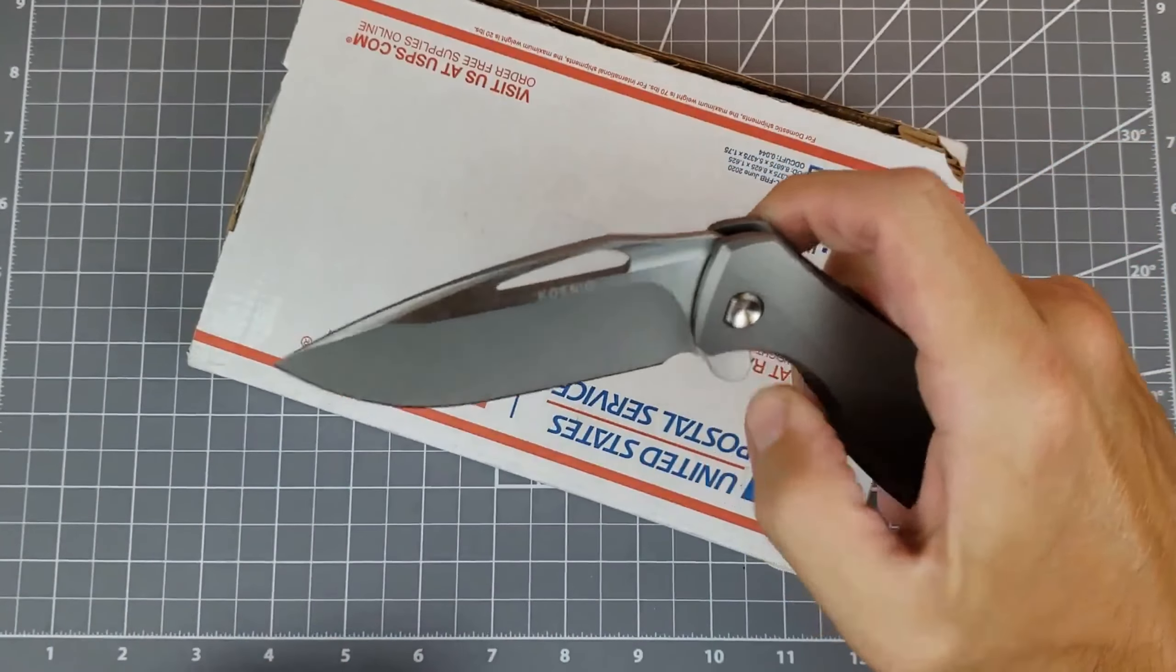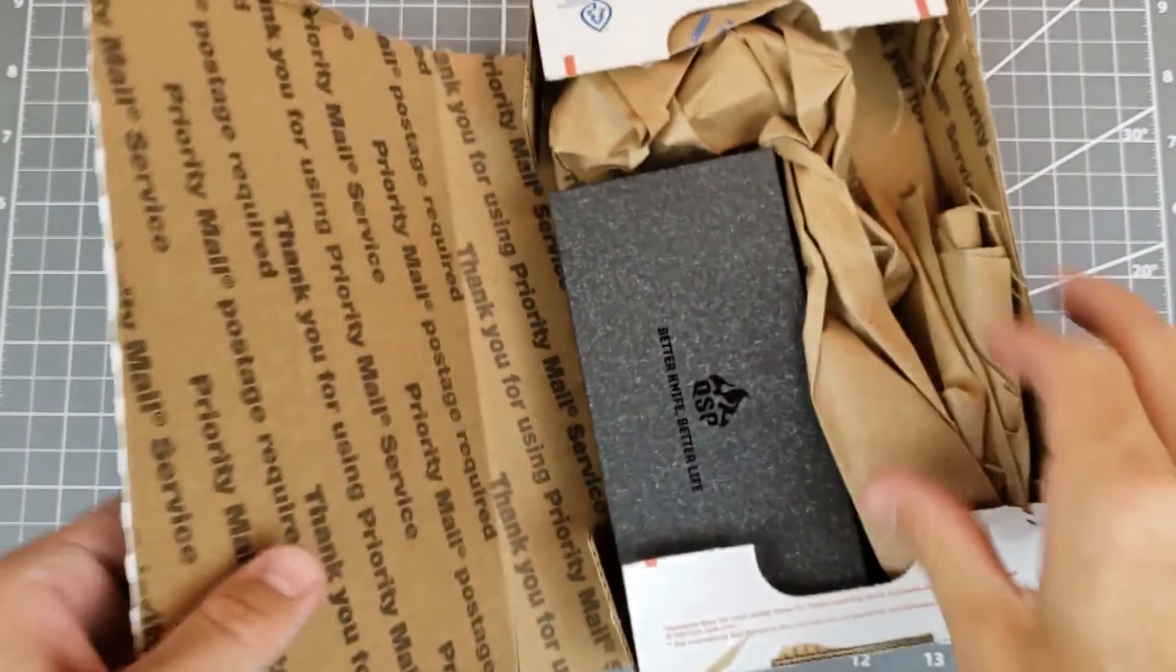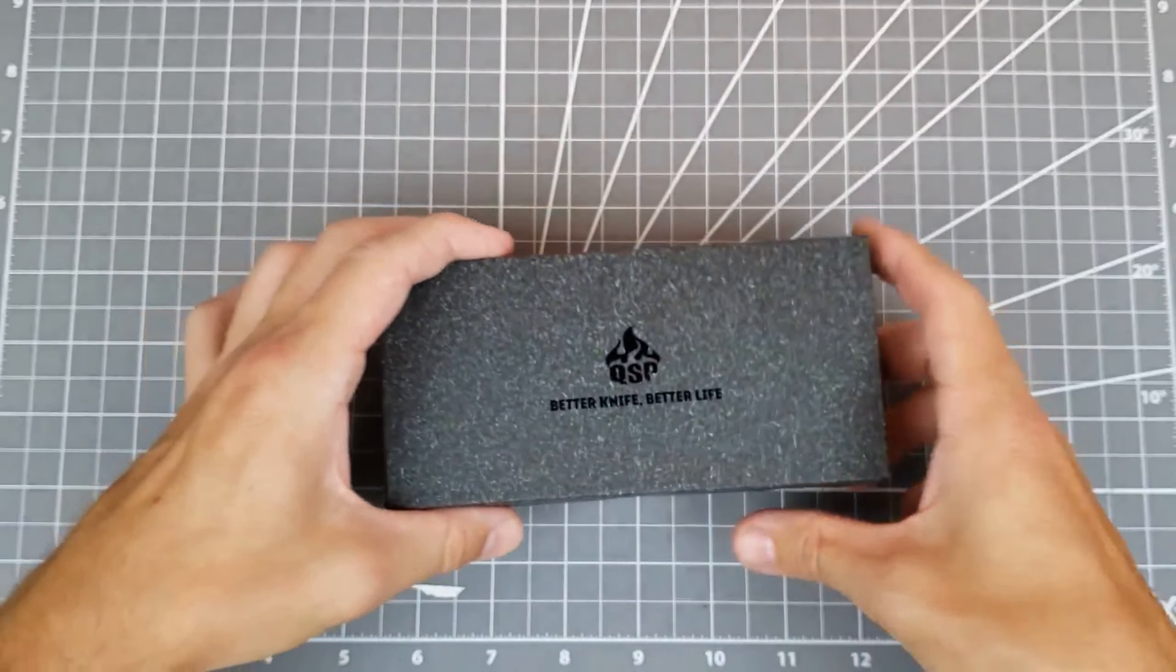To unbox it, got the Koenig Arius. Here we go, QSP, better knife, better life.